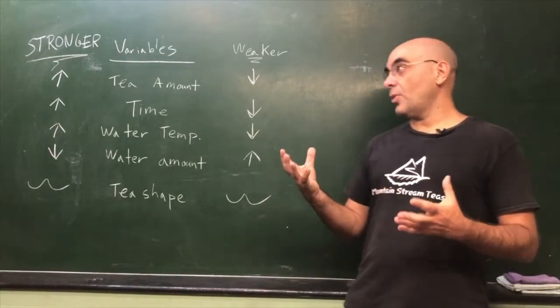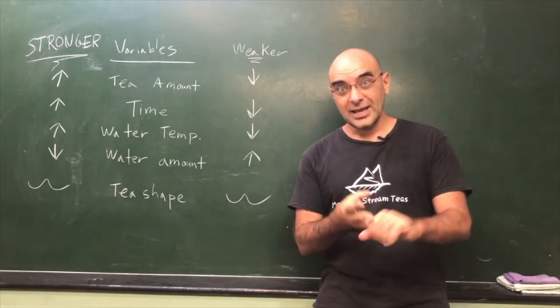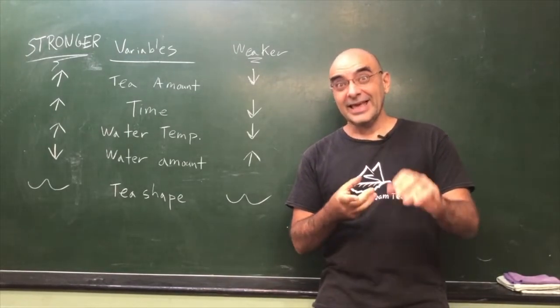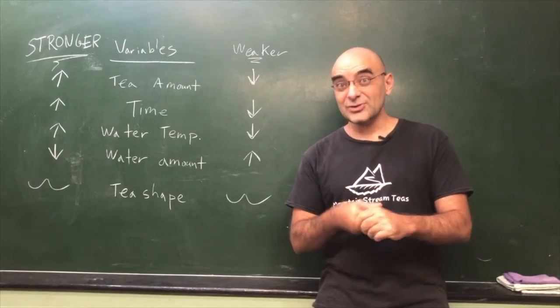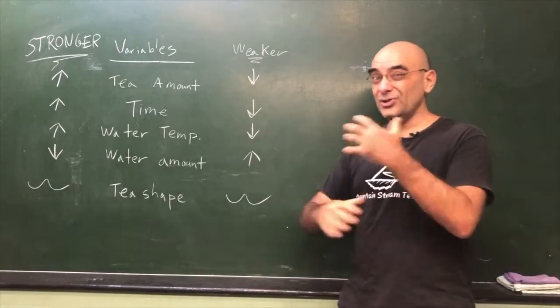So what are we looking at when we're brewing tea? We're looking at basically three things: water, the tea, and the vessel. So those are the three main variables.